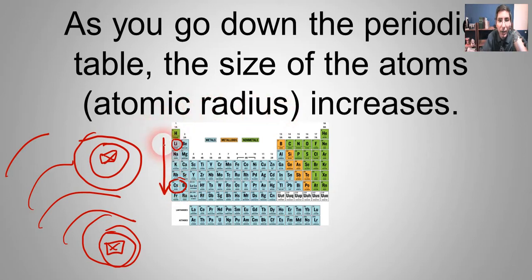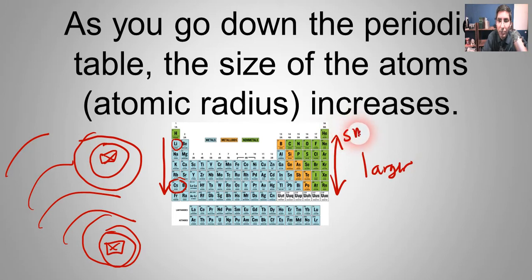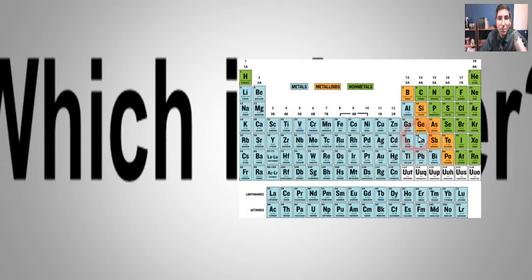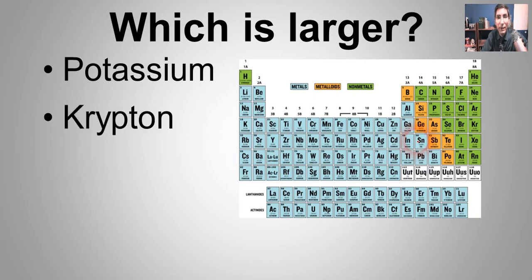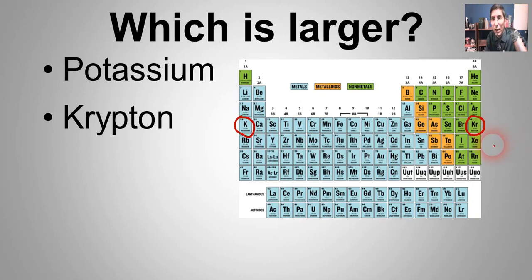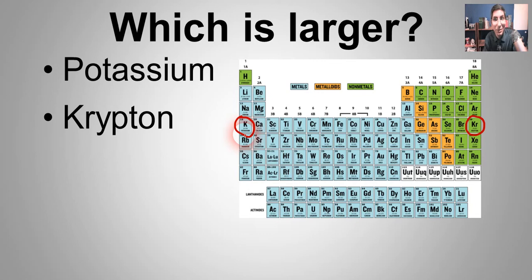So that's a trend — as you go down the table it gets larger, and toward the top the atoms get much smaller. Now what if you have two atoms in the same period of the periodic table, meaning they have the same number of energy levels? Let's compare potassium with krypton. Which of those two atoms is larger? Well, a lot of students will say krypton because it has more electrons, but as it turns out that's actually not correct. Potassium is larger.